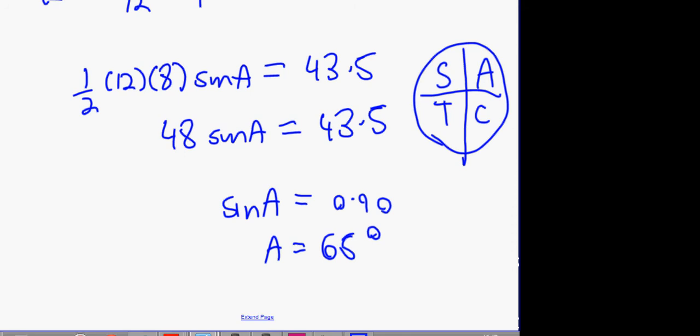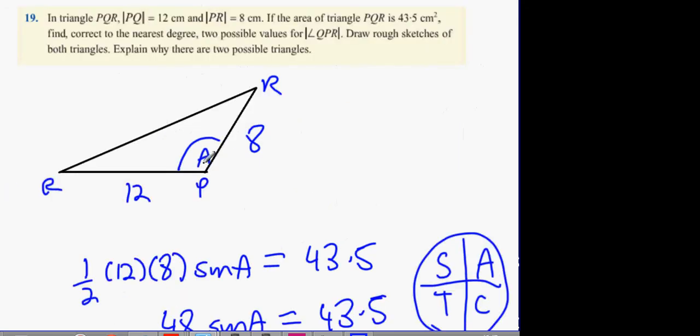So the first answer is A equals 65, and what's the second answer? 180 minus 65 which gives us 115. It's basically if I drew you the obtuse angle of 115, this triangle could also be an acute angle triangle with the same area. Both of them work the same. Okay guys.